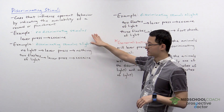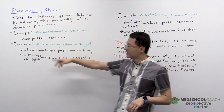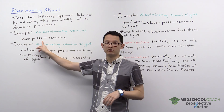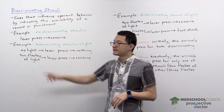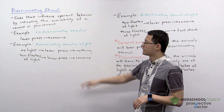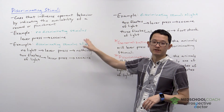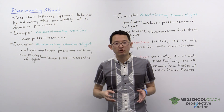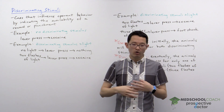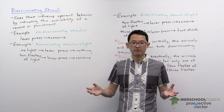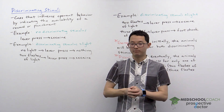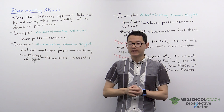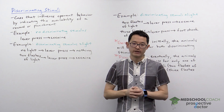This example where a rat can just press a lever and get cocaine is a situation where there is no discriminating stimulus. That's because the reward is always available — anytime the rat presses the lever, that rat is going to get cocaine.